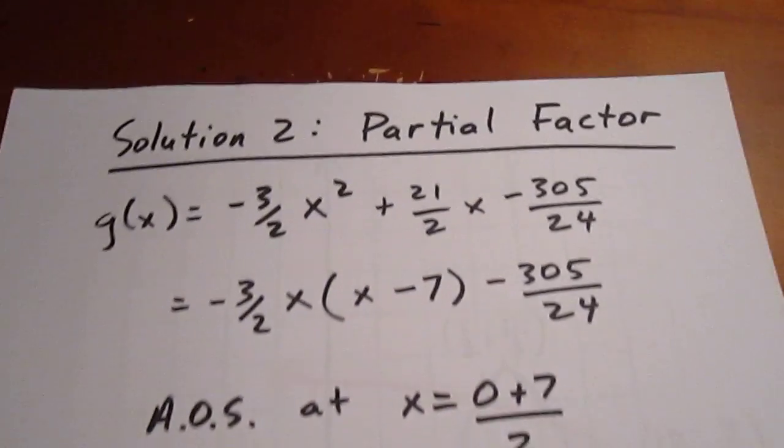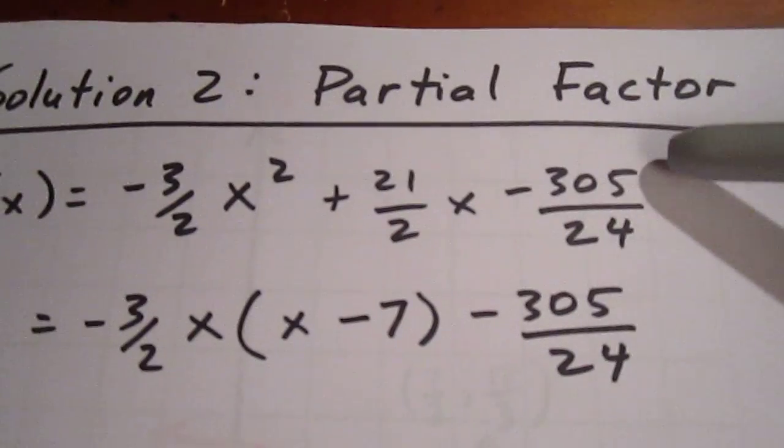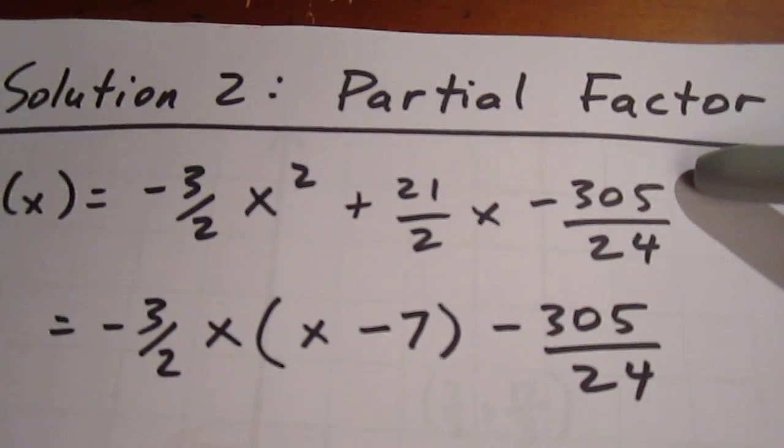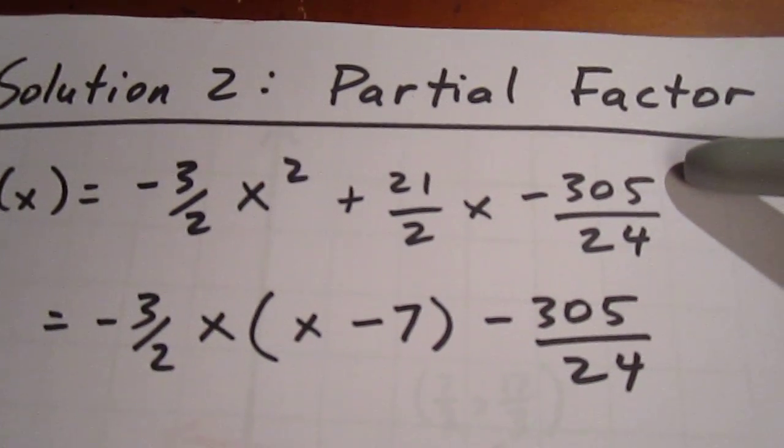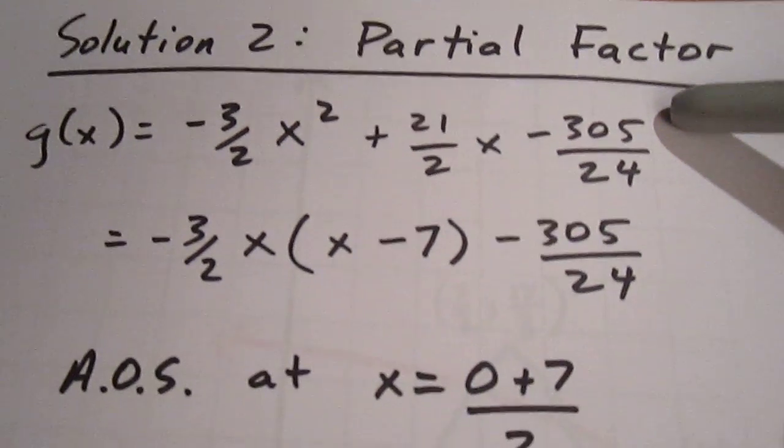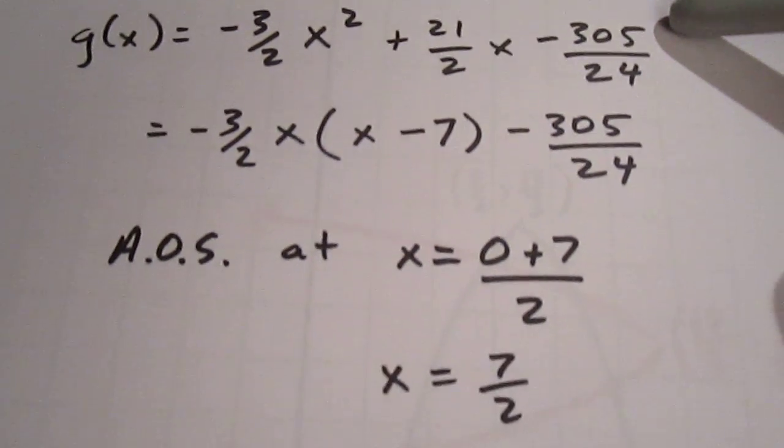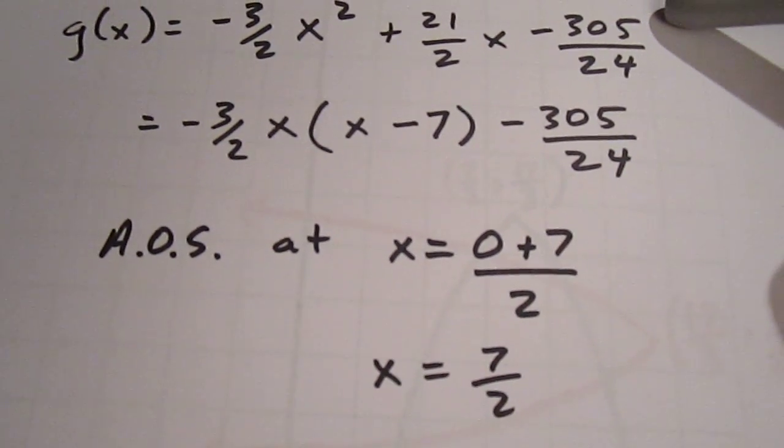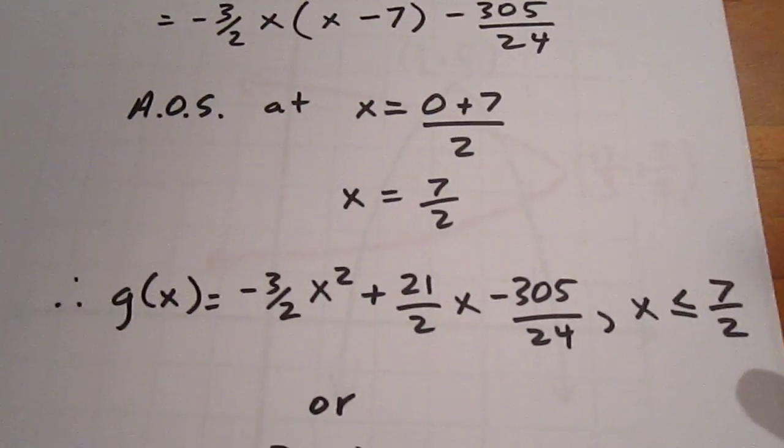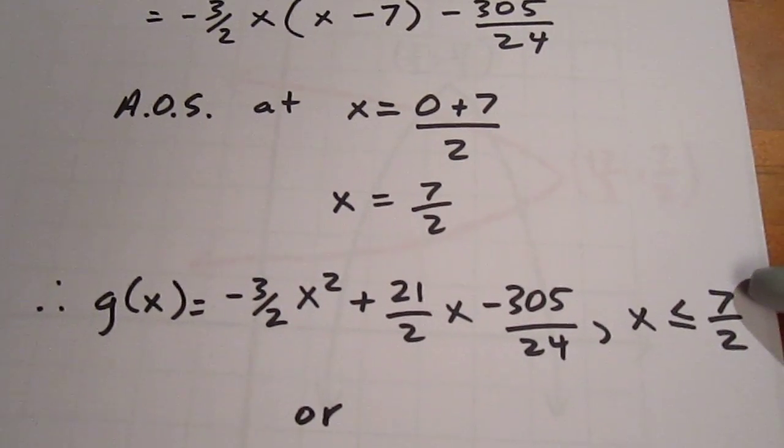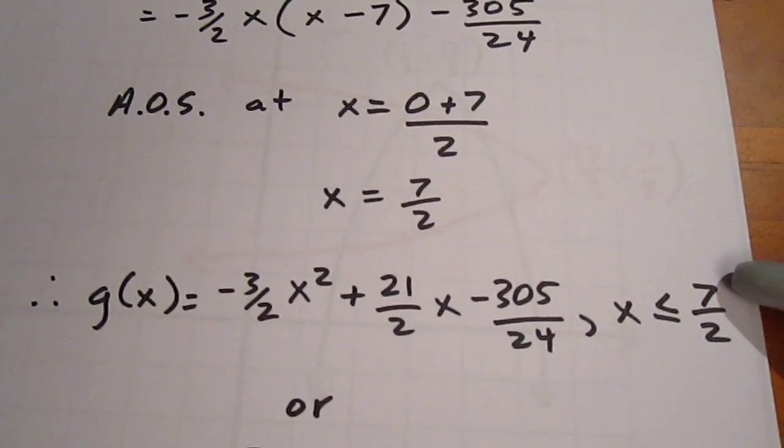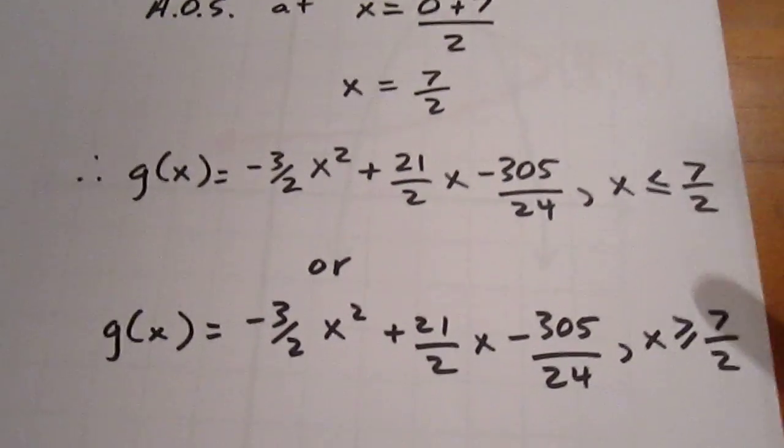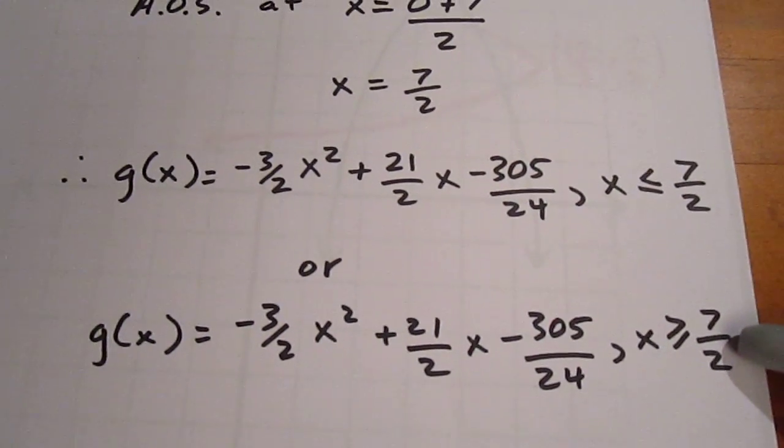If we choose instead the partial factor, we factor out negative 3 halves x from the first two terms. We then recognize that our axis of symmetry would be at x equals 7 over 2. We would then be able to say that the original function expression applies with the restriction that x is less than or equal to 7 over 2 or x is greater than or equal to 7 over 2.